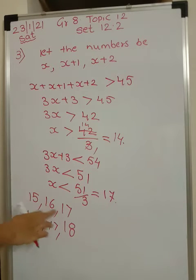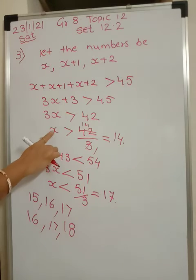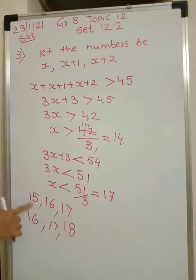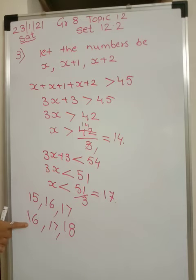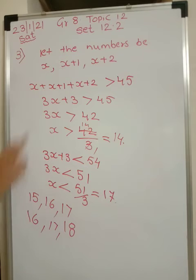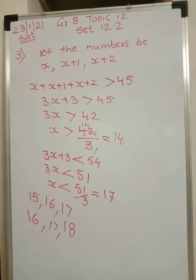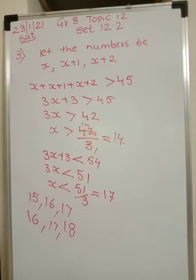So the numbers would be 15, 16, 17 or 16, 17, 18. Since x is greater than 14 it can be 15 or 16, but it should be less than 17 so it cannot be 17. If the first number is 15, the others are 16 and 17; if it is 16, the others are 17 and 18.